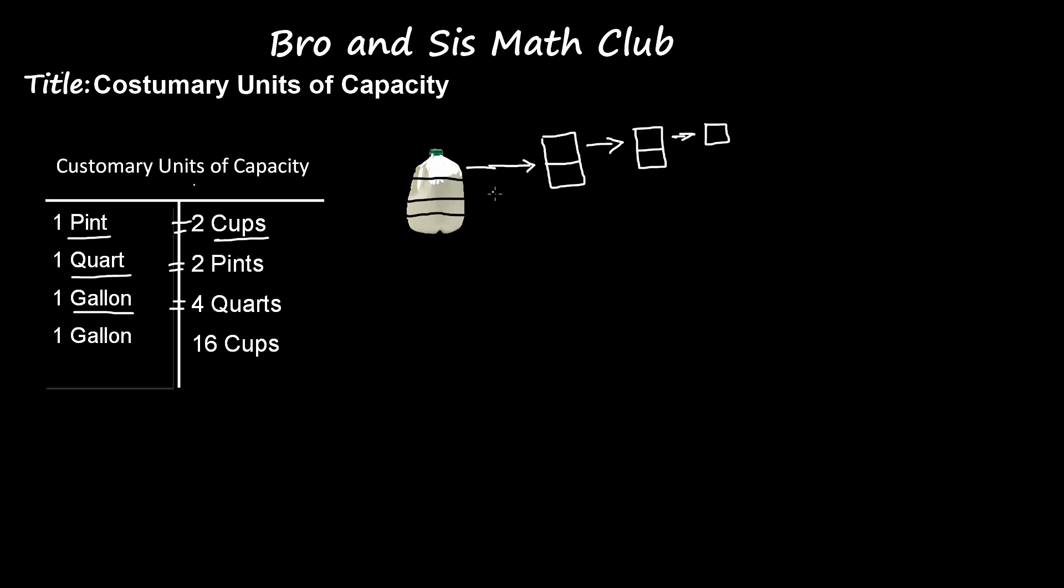One gallon is equal to four quarts, one quart is equal to two pints, and one pint is equal to two cups, you can easily calculate that one gallon is equal to 16 cups. So 16 people will each get a cup of milk. That's how we use units of capacity in our everyday life.